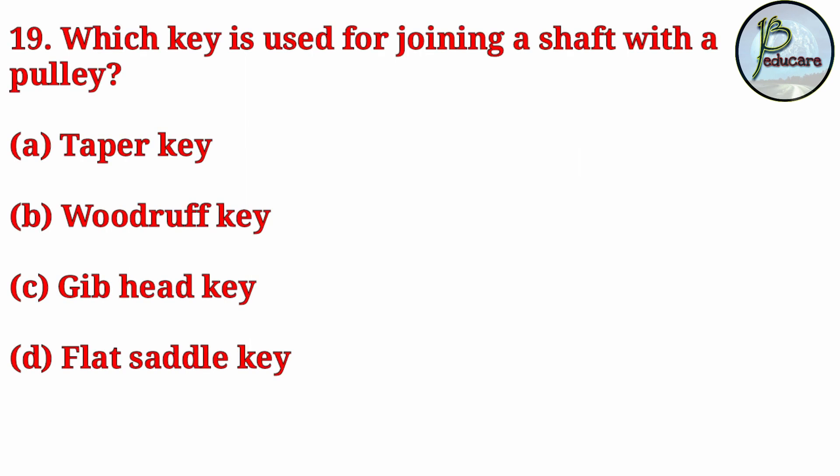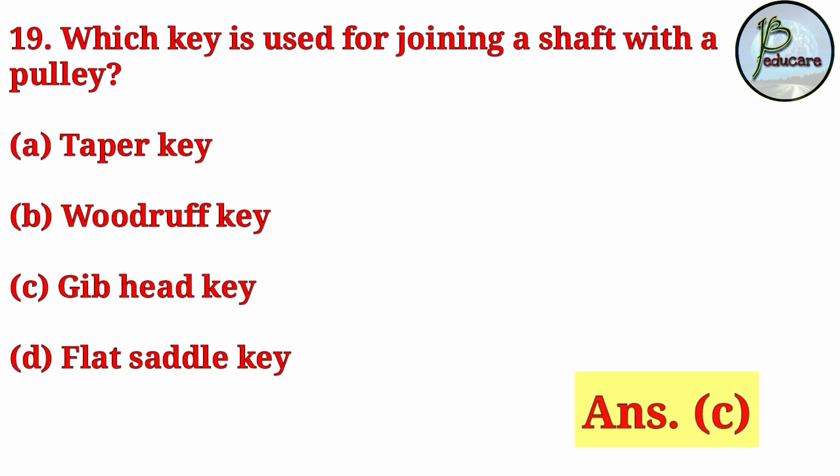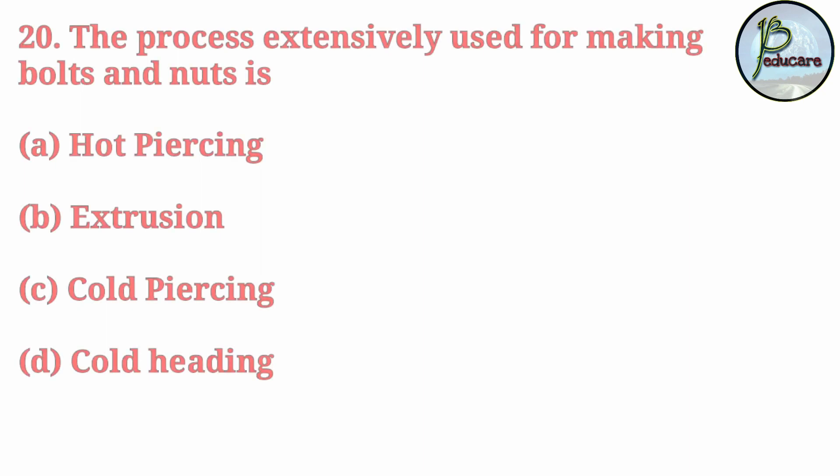Next question: which key is used for joining a shaft with a pulley? The correct answer is option C: gib head key.